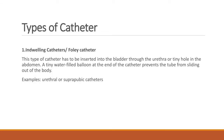Types of catheter — Indwelling catheter (Foley catheter): This type of catheter has to be inserted into the bladder through the urethra or a tiny hole in the abdomen. A tiny water-filled balloon at the end of the catheter prevents the tube from sliding out of the body. Examples include urethral or suprapubic catheters.